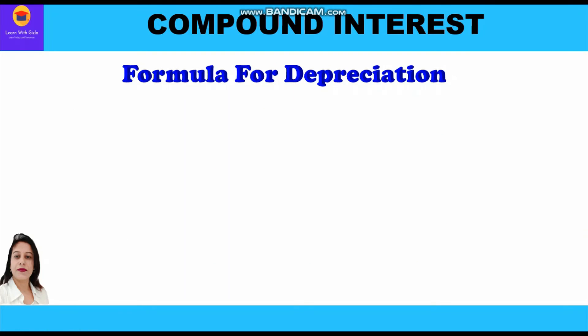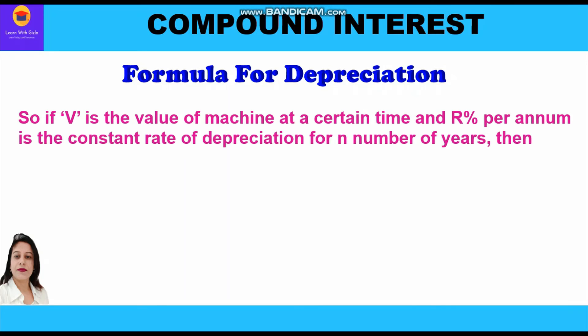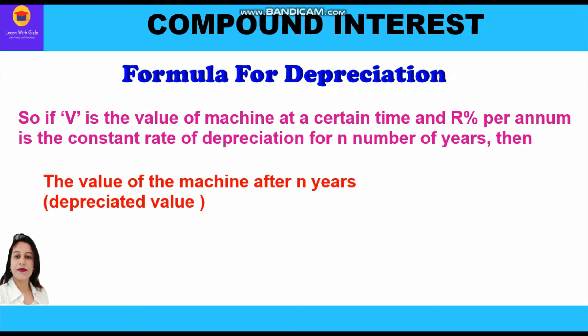Now let's learn the formula used for depreciation. If V0 is the value of a machine at a certain time and r percent per annum is the constant rate of depreciation for n years, then the depreciated value after n years is given by: Vn = V0 × (1 − r/100)^n, where Vn is the depreciated value, V0 is the initial value, r is the rate of depreciation, and n is the number of years.